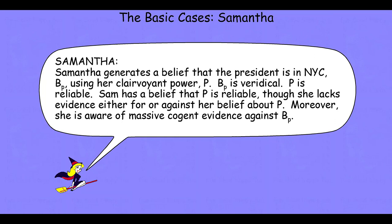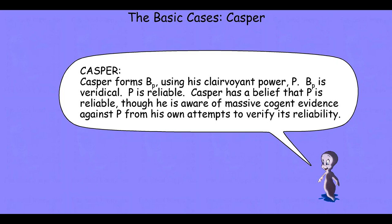The next case is the Casper case. Casper forms that same belief — the president is in New York City — using that same perfectly reliable clairvoyant power. The belief is true and the clairvoyant power is one hundred percent reliable. However, Casper has a belief that his clairvoyant power is reliable even though he's aware of massive cogent evidence against its reliability from his own attempts to verify it.